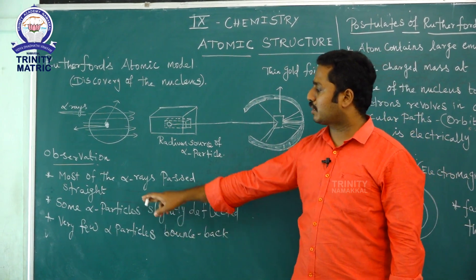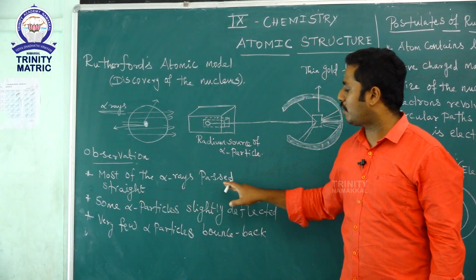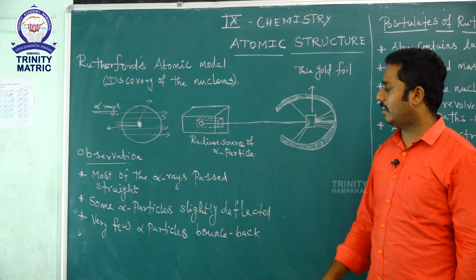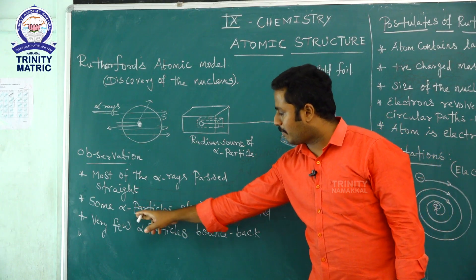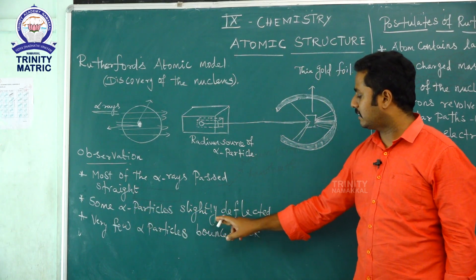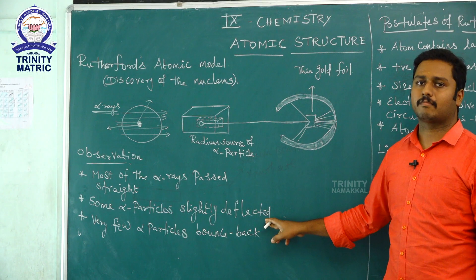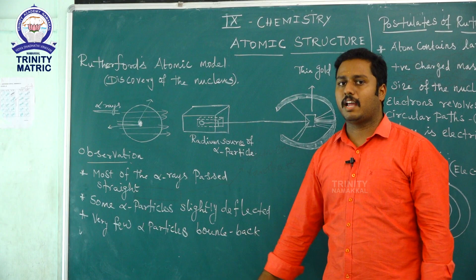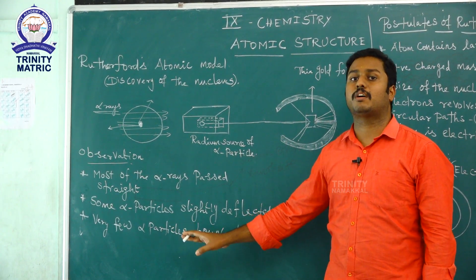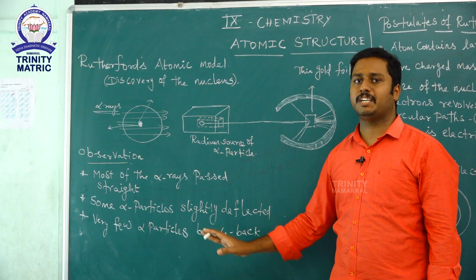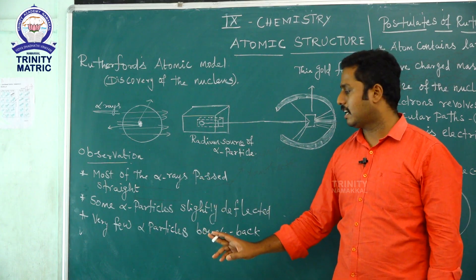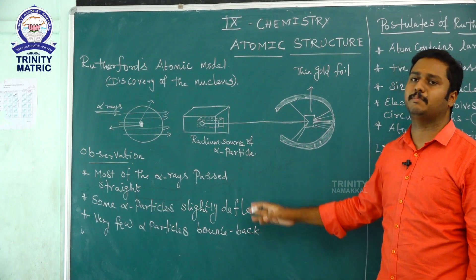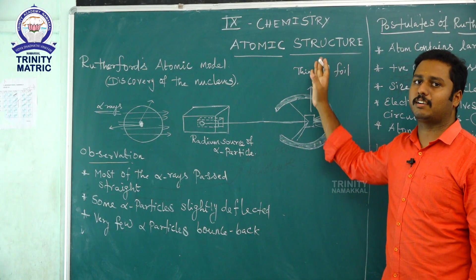His observations were: first, most of the alpha rays passed in a straight line through the gold foil. Second, some of the alpha particles were slightly deflected. Third, very few alpha particles — about one in 20,000 — bounced straight back.